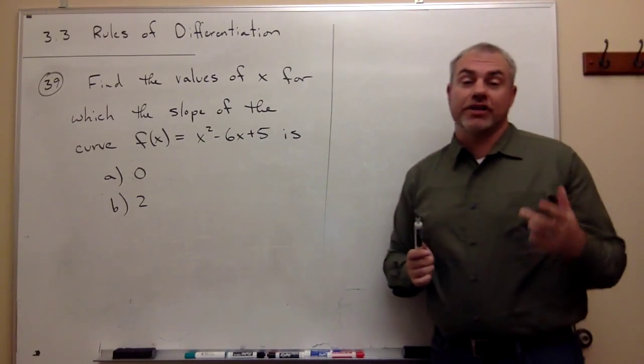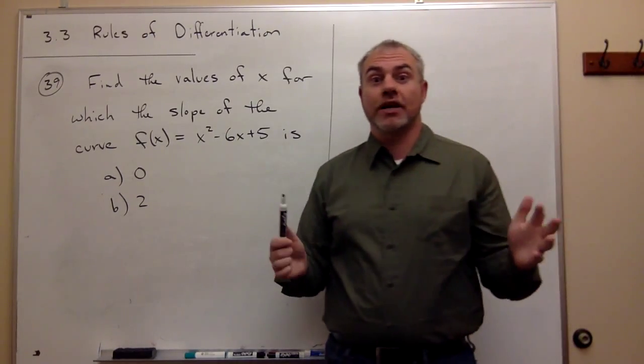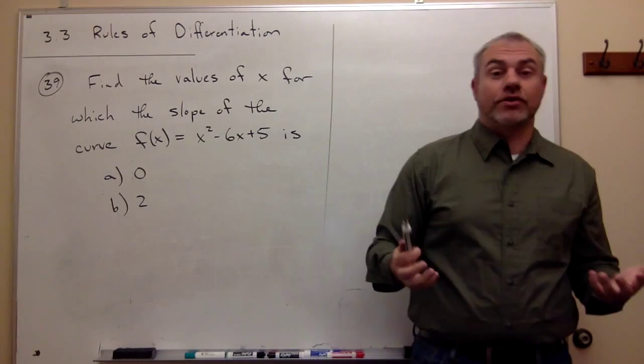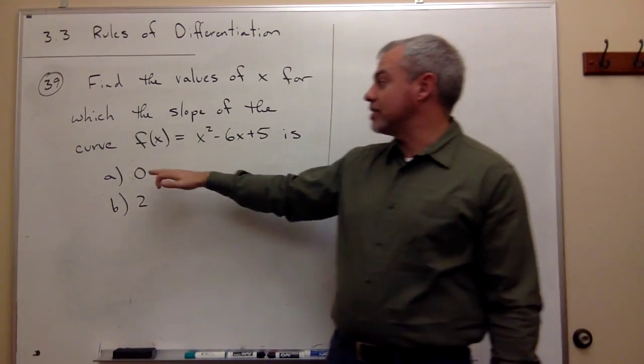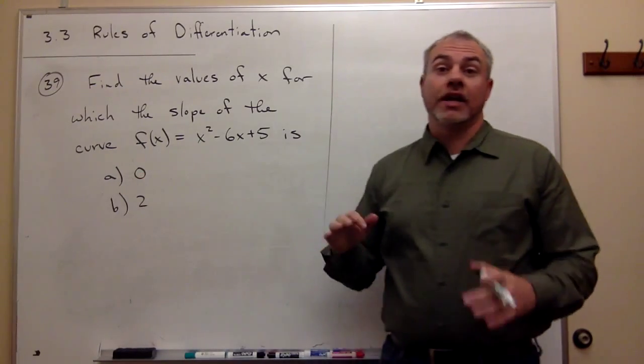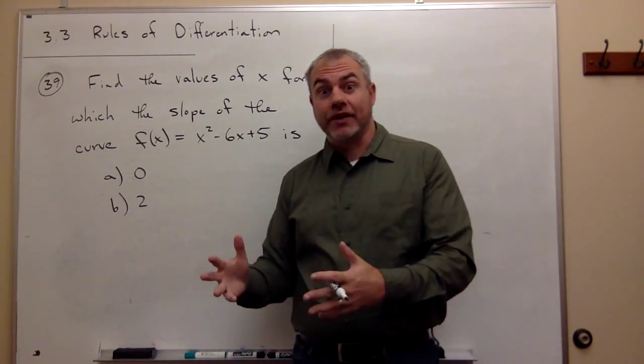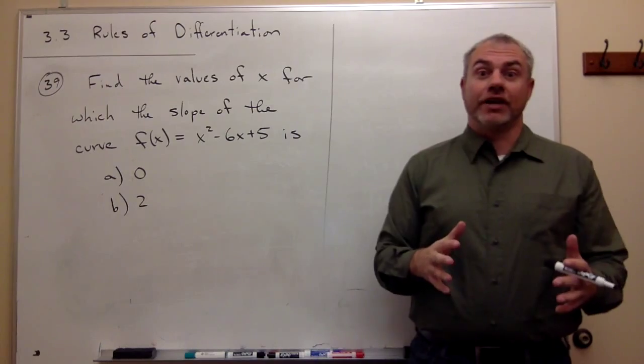If I'm finding slope that should immediately scream at you, you need to take the derivative. So we've got to take the derivative first, and we're trying to find where is slope 0. In other words, where is the derivative 0? Derivative means slope.